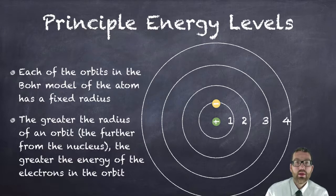Also the further the orbit, the further the radius, the greater the energy of the electrons in that orbit. An electron in the fourth principal energy level has more energy than an electron in the first energy level.